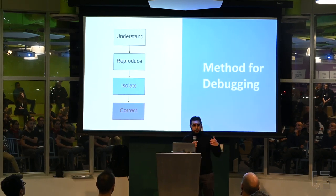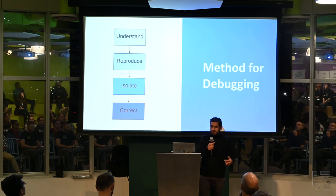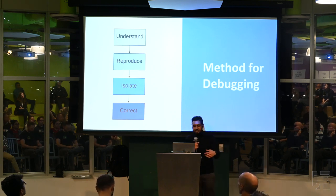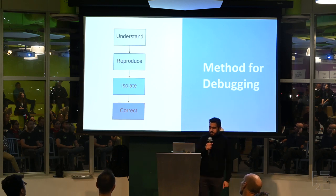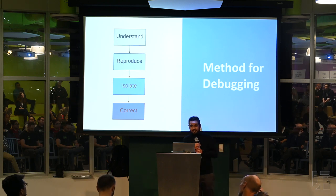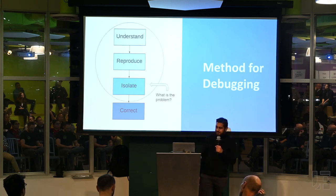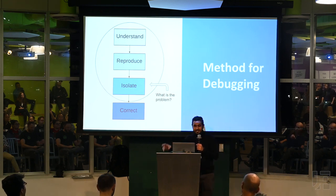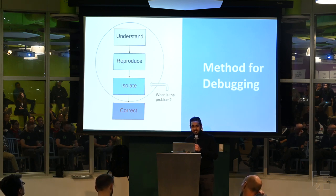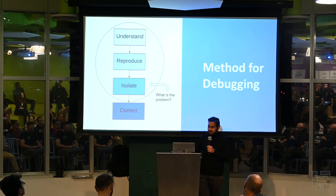The first phase is really about understanding your problem space, understanding what your product is meant to do, and what the bug really is. The second step is reproducing your bug — what is that set of preconditions that actually cause your bug? The third part is to isolate your bug — what part of the code base does the bug actually originate from? And the fourth step is actually just correcting the bug. Most of this presentation will focus on the first three steps, since actually correcting the bug really depends on the nature of the bug and the methodology your team uses.